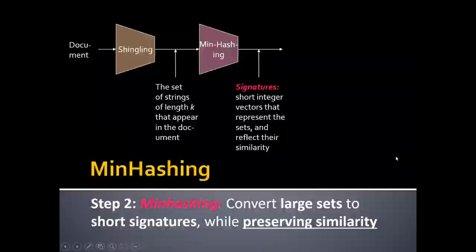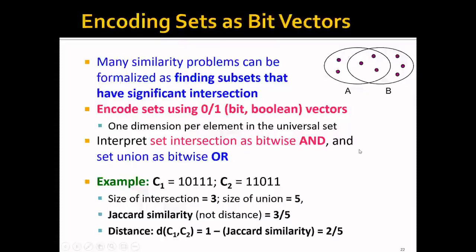So this is why we need step two, which is minhashing, to convert large sets to small signatures while preserving similarity. So to know more about minhash, let's start with encoding sets as bit vectors.